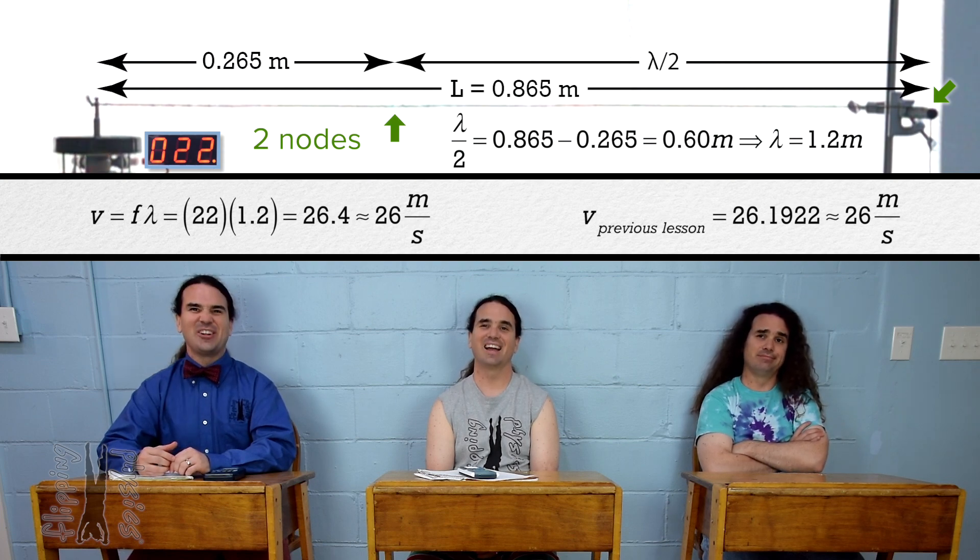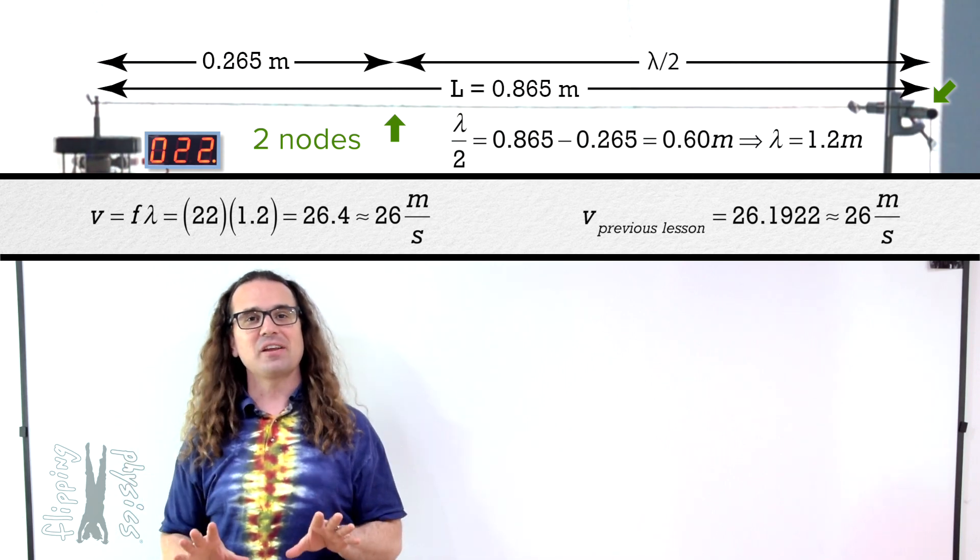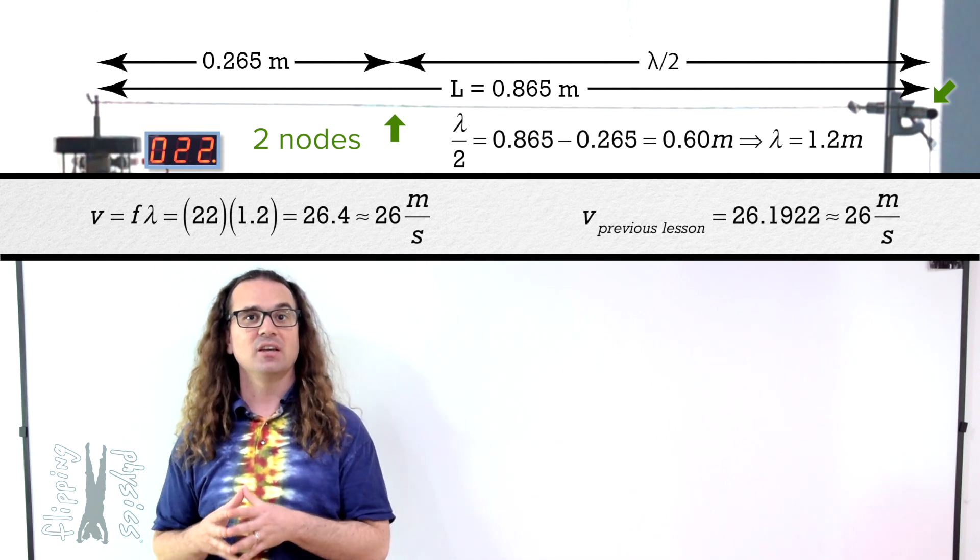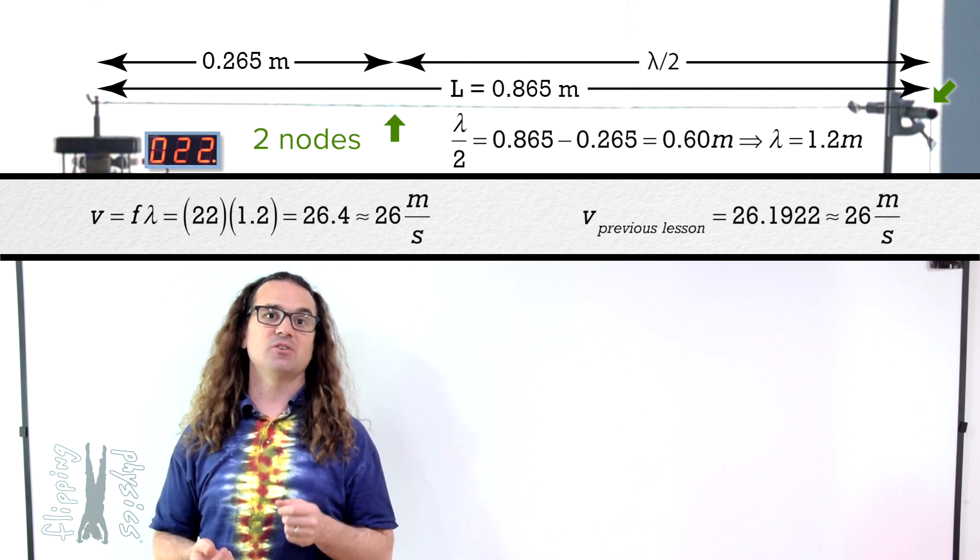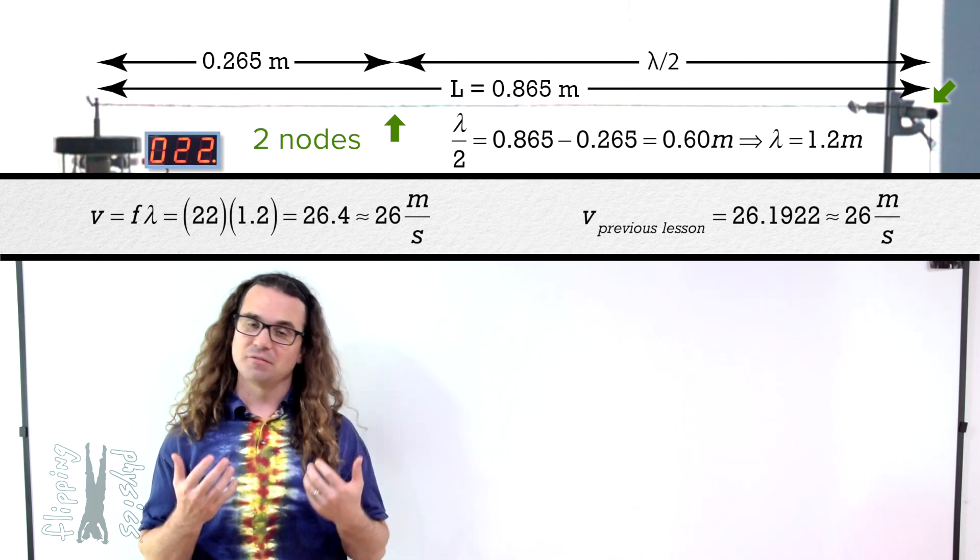I would say that confirms our hypothesis of why this standing wave pattern can exist on this string. Cool. Nice. Absolutely. You figured it out and showed the wavelength and frequency result in a similar wave speed to a previous video. Very nice.